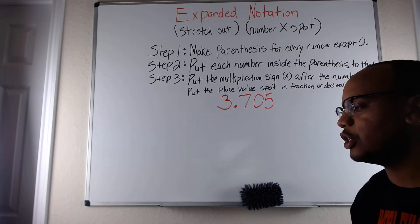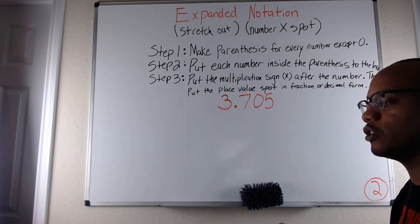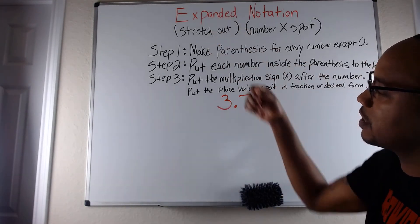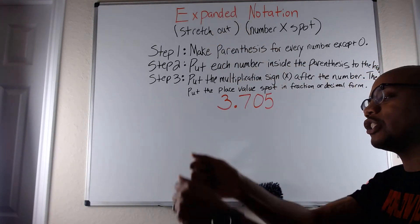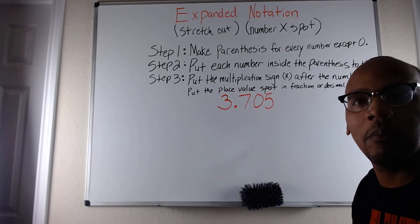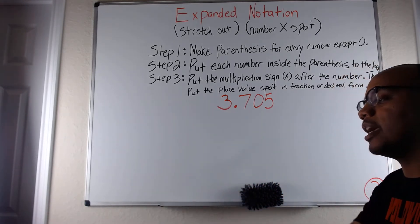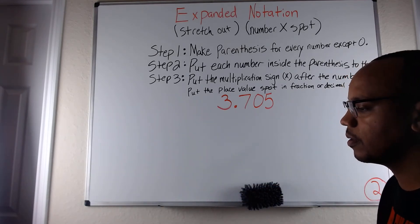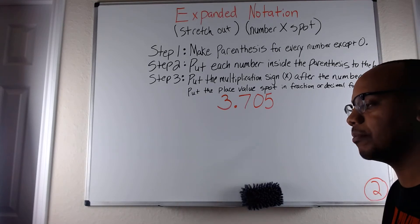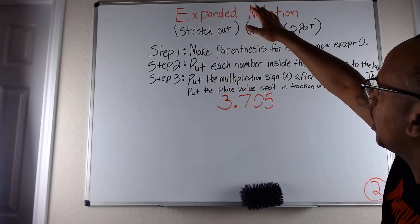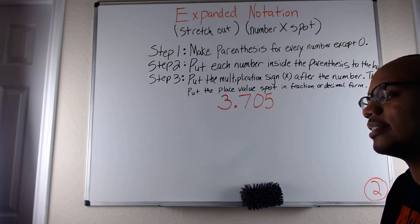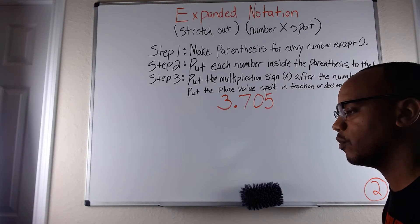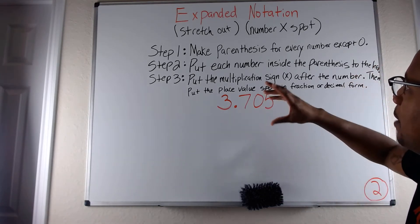I believe in teaching children what the words actually mean. To expand something — if something is expanded, it is stretched out. Think of it like a rubber band: when a rubber band is expanded, it is stretched out. Notation in this instance is the number times the place value spot that it's in.